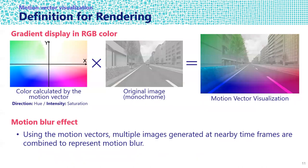As for the gradient display, by blending the RGB color space with the original drawing in monochrome, the motion vector is visualized on the screen. As for motion blur, multiple images generated at nearby time frames are combined to represent motion blur. The shader program is implemented in the OpenGL shading language and can be customized by the user.